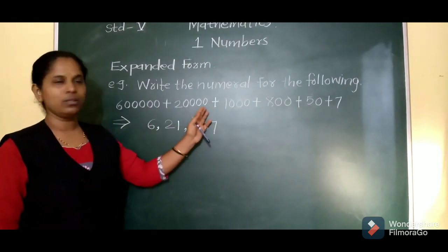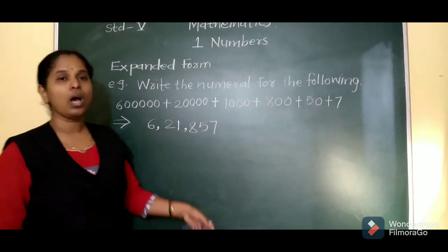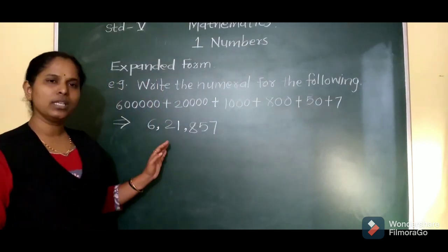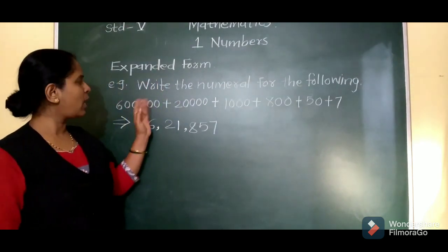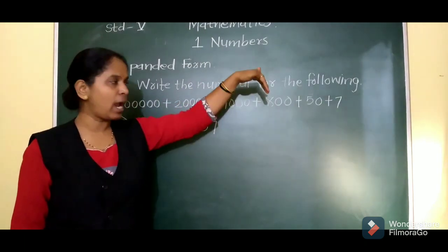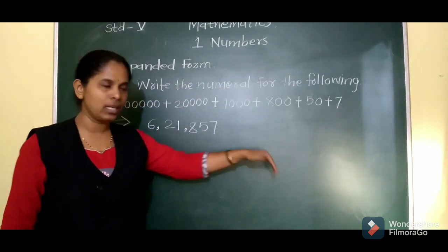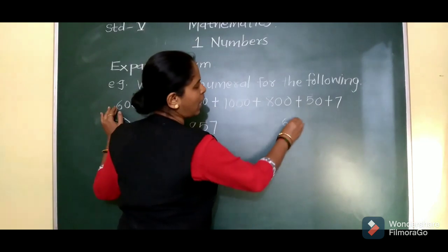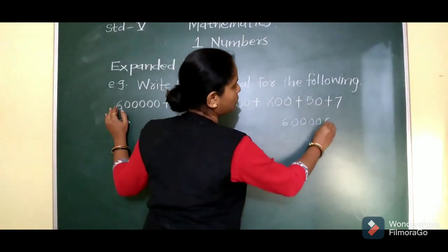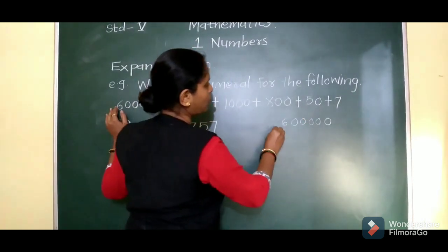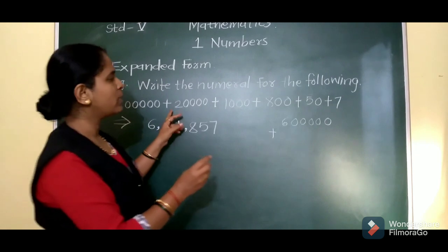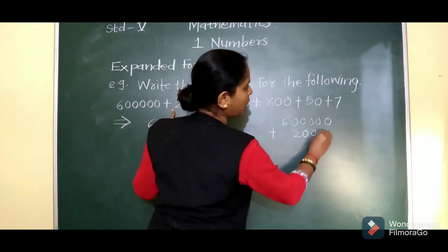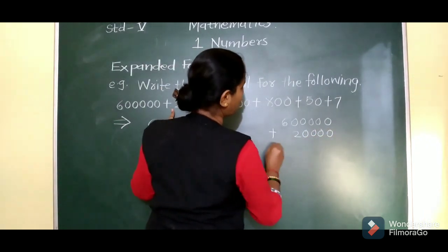If you don't know how to write it directly, then you can arrange the numbers vertically and add them. For example, 6 lakh plus 20,000 — vertically arrange the numbers.